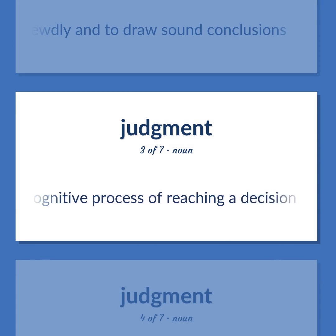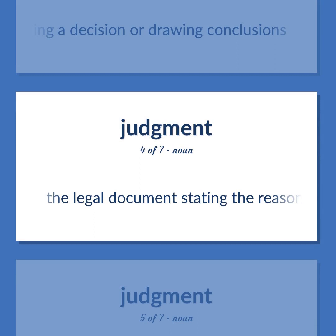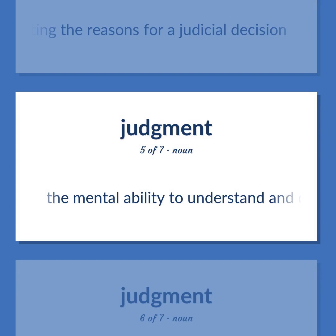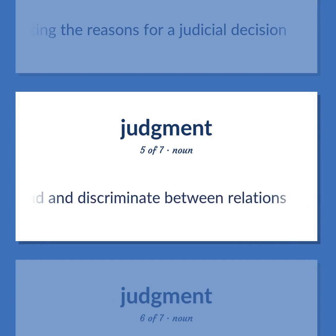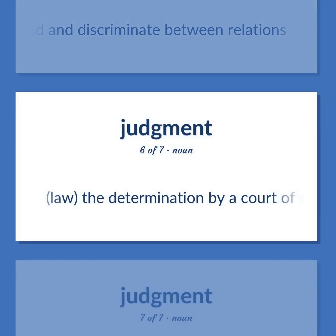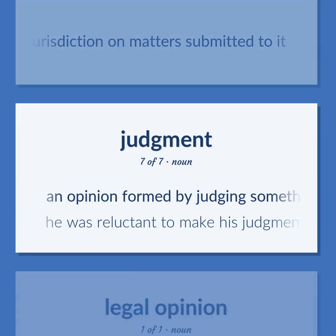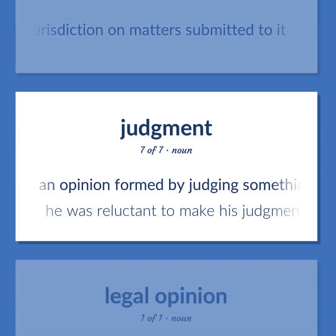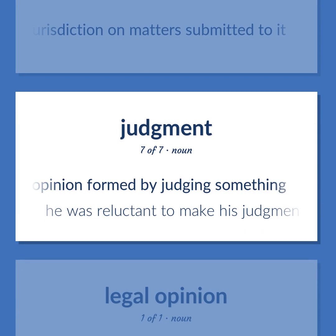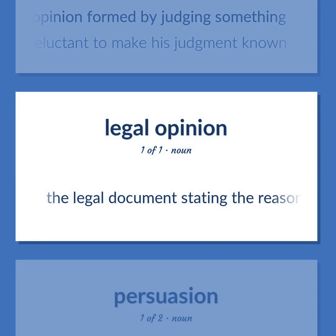'Judgment': The cognitive process of reaching a decision or drawing conclusions. The legal document stating the reasons for a judicial decision. The mental ability to understand and discriminate between relations. In law, the determination by a court of competent jurisdiction on matters submitted to it. An opinion formed by judging something. Example: 'He was reluctant to make his judgment known.'